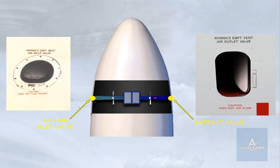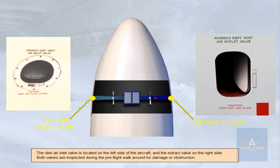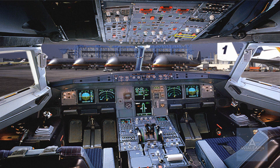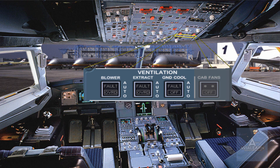Both valves are inspected during the pre-flight walk-around for damage or obstruction. On the overhead panel, there is a ventilation panel that contains three push-button switches associated with the ventilation system. During the pre-flight cockpit scan, you should confirm that these switches are in their lights-out position. The avionics ventilation system will then operate automatically and requires no further pilot input.